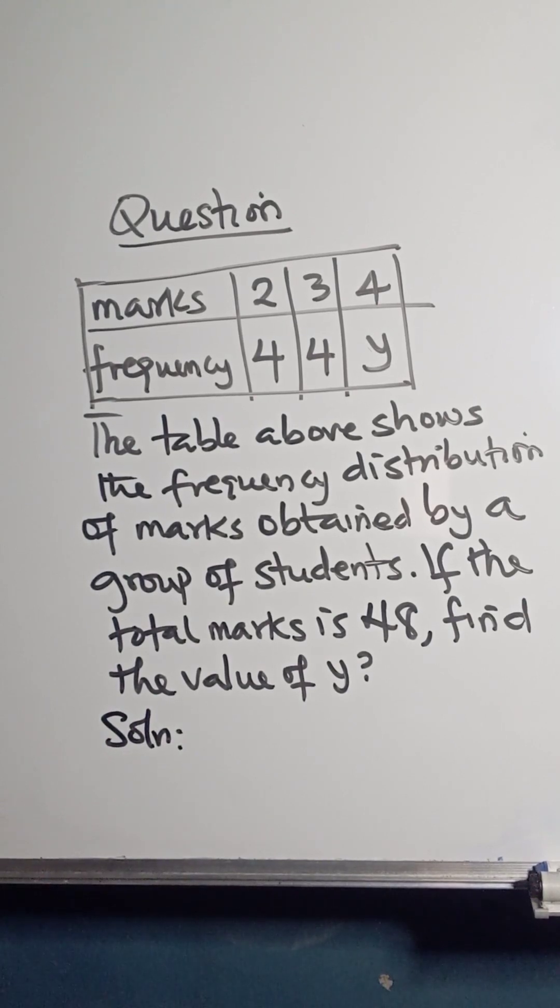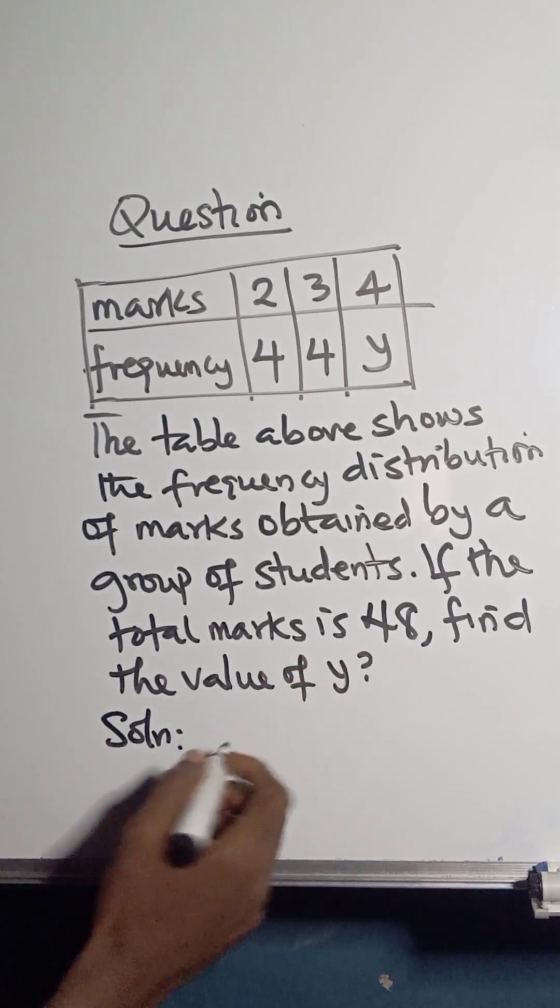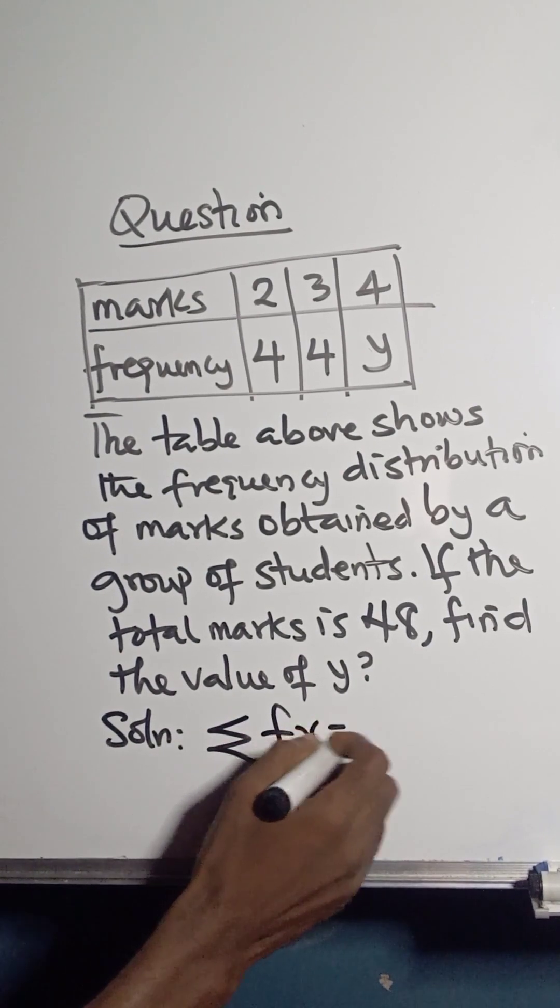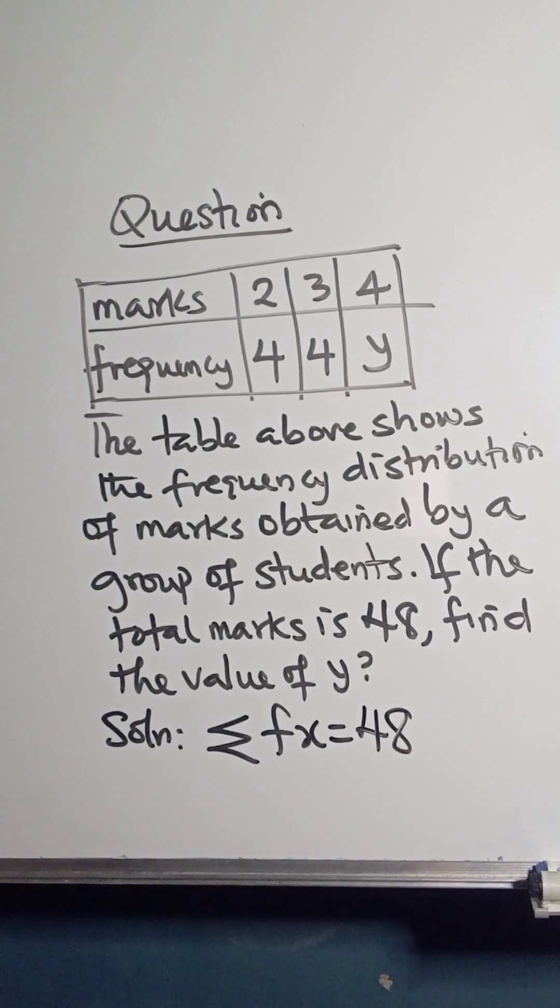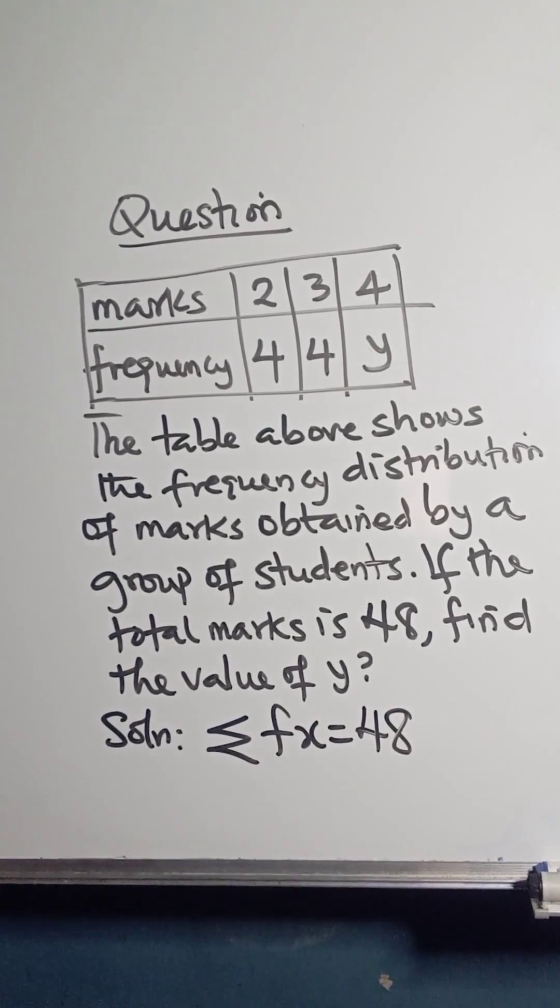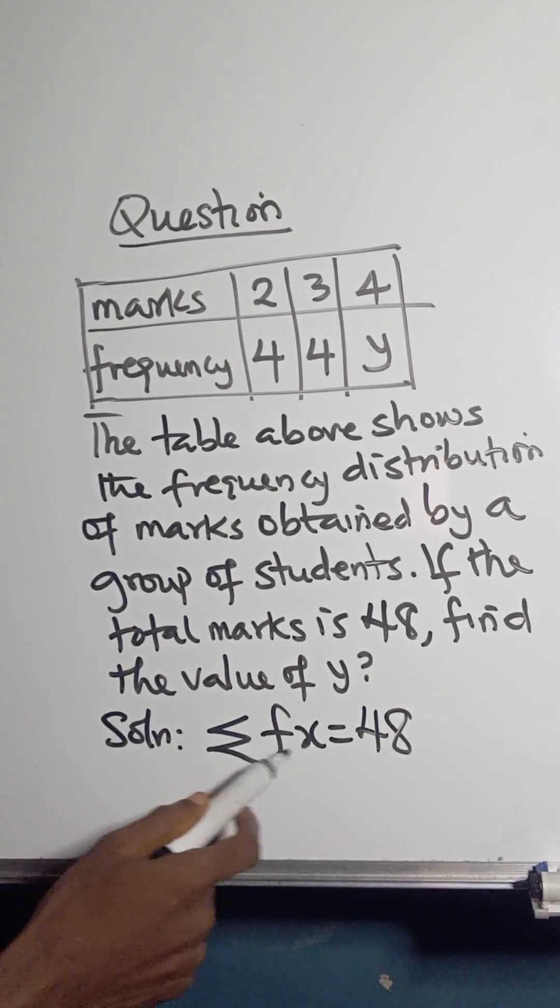So what's the solution to this problem? If the total marks is 48, that means summation of f times x equals 48. Remember, when you are looking for mean, the total is always summation f times x.